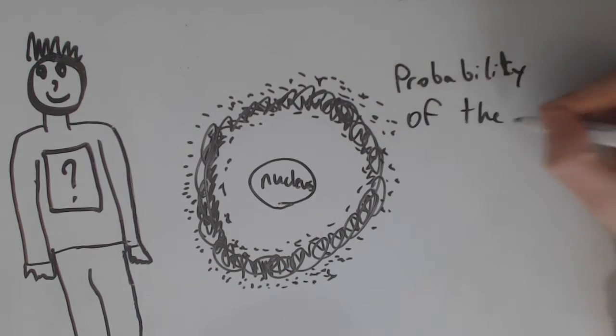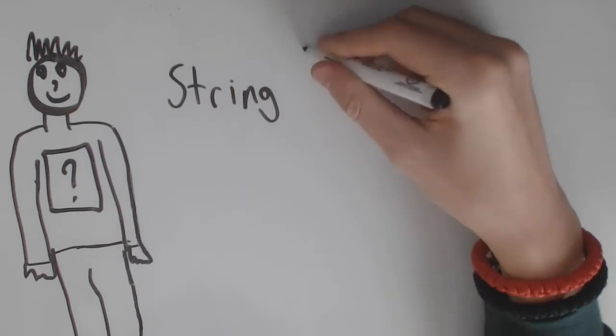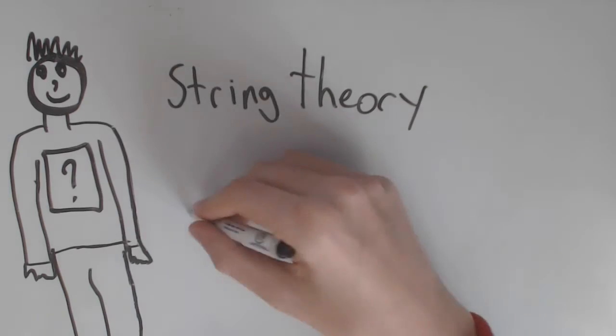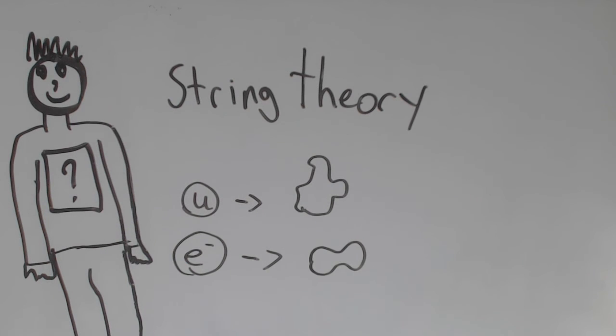Pretty crazy, right? Another theory that is more or less accepted by the science community is string theory. The theory of everything. It postulates that all particles are actually identical strings that have different vibrations to correspond to different types of particles.